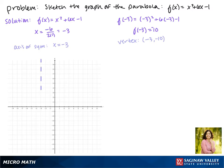So here on the graph, this is our axis of symmetry, and then our vertex is at the point (-3, -10).